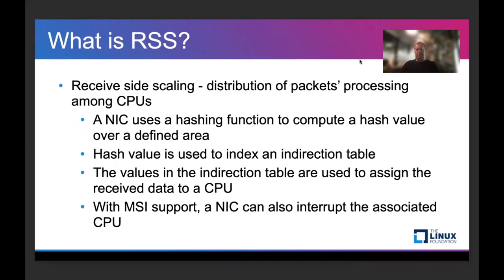So first of all, what is RSS? Receive-side scaling is one of the mechanisms to improve network device performance. Performance is improved by two things. First, packet processing will be distributed among different CPUs, so the processing will be parallel. Second, we can have cache localization of networking traffic processing for a specific application running in the VM, because the packets sent and received by the application could be processed on the same CPU.